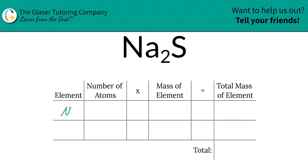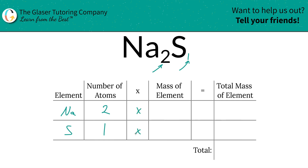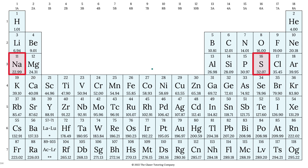The first thing is we're going to write the elements down that we see. So we've got sodium, Na, and we've got sulfur. Next is to identify the number of atoms of each, and that's where the subscripts come into play. If there's no subscript at the bottom of the element, just put in a 1. That means we've got 2 sodium, 1 sulfur.